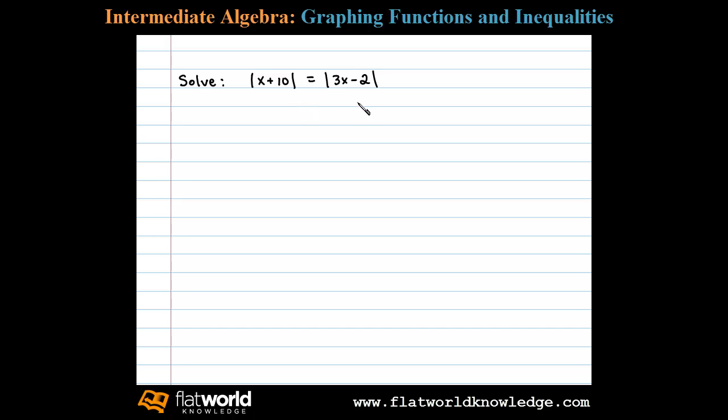Here we're asked to solve an absolute value equation when we have two absolute values that are equal. To solve this, we can set this up using two equations where the argument here, x plus 10, is set equal to plus or minus the argument 3x minus 2.